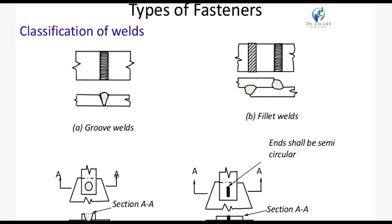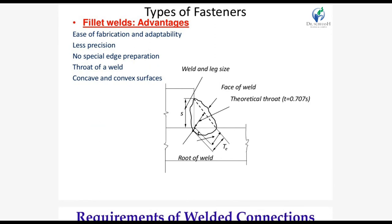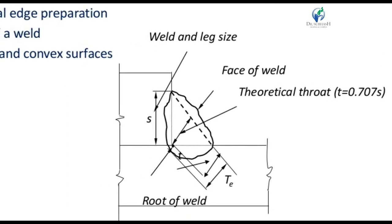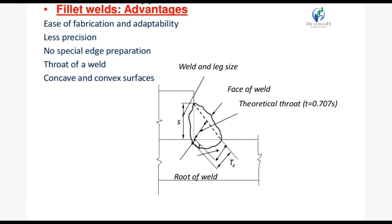Fillet welds are widely used in structural engineering applications due to their economy and ease of application. They are approximately triangular in cross section. When providing fillet welds, the notation includes: S for weld size (length of size), face of weld, throat thickness denoted by T (the inclined member dimension), and root of weld. These are the common parts when providing a welded connection.